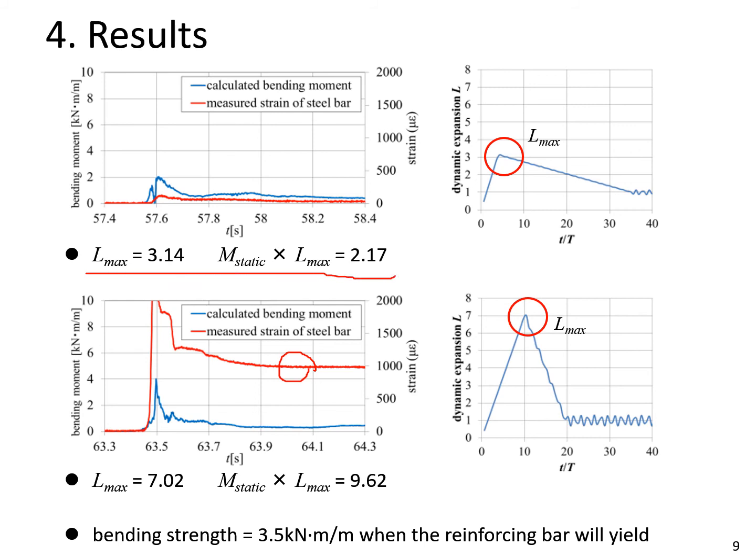From the lower figure, Lmax is 7.02 and M static times Lmax is 9.62 kNm per meter.